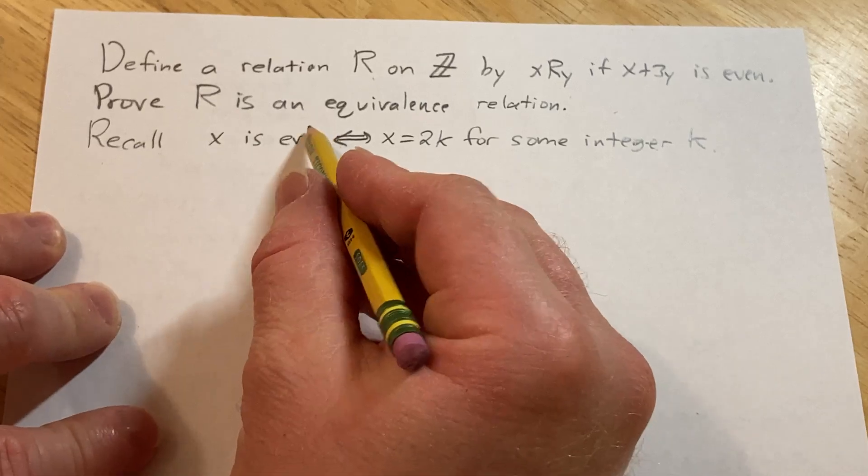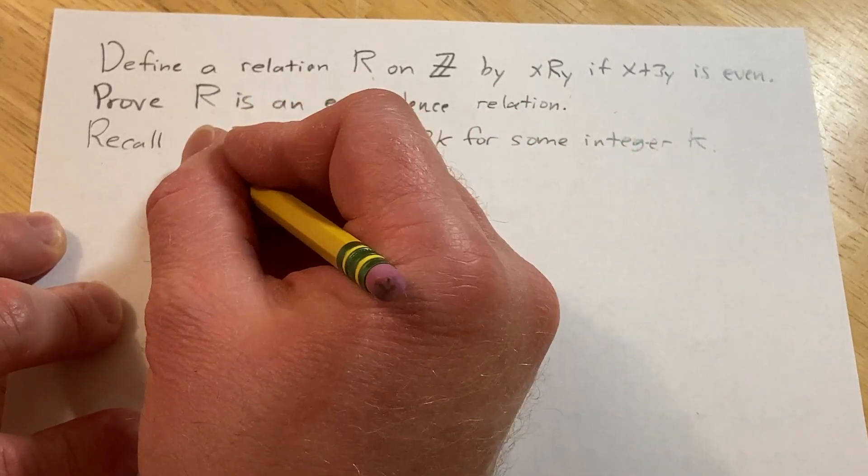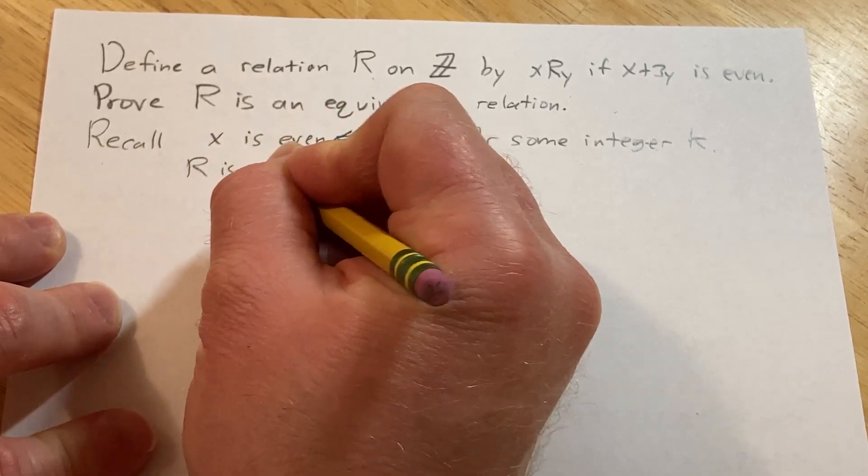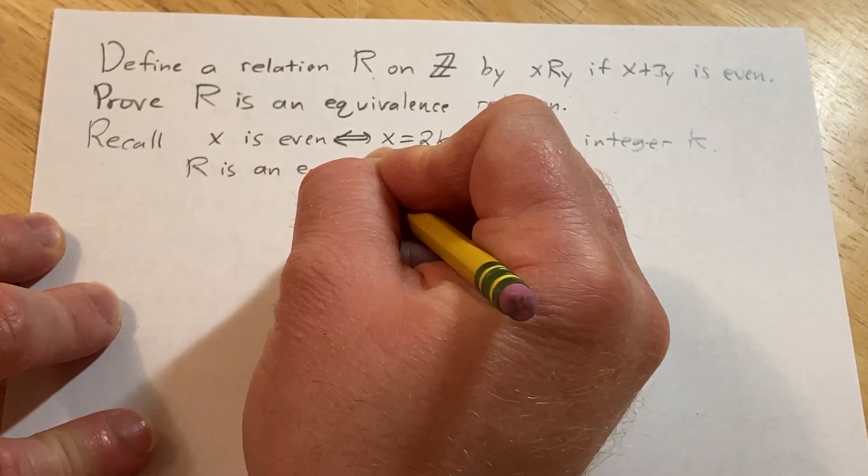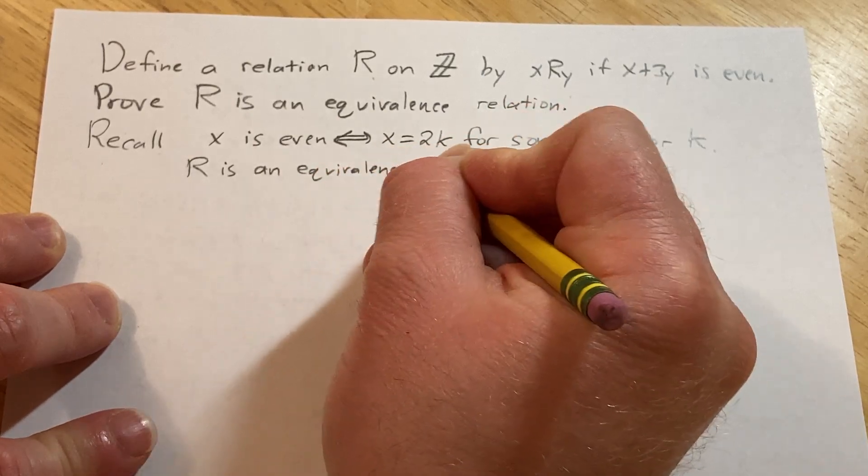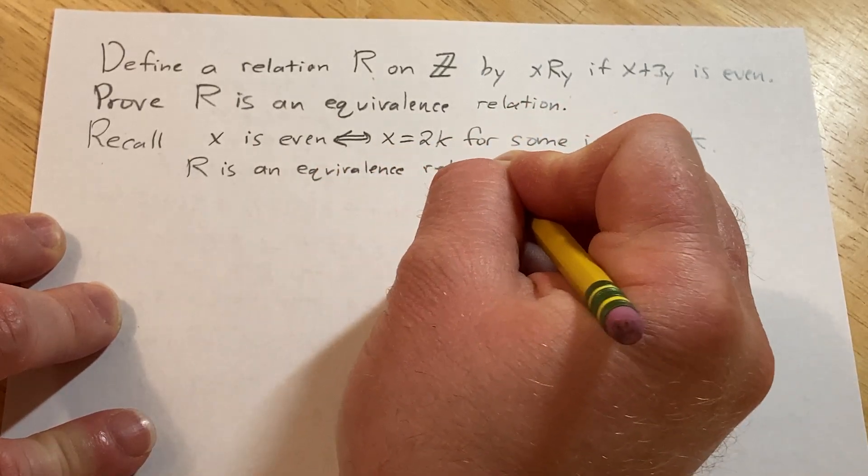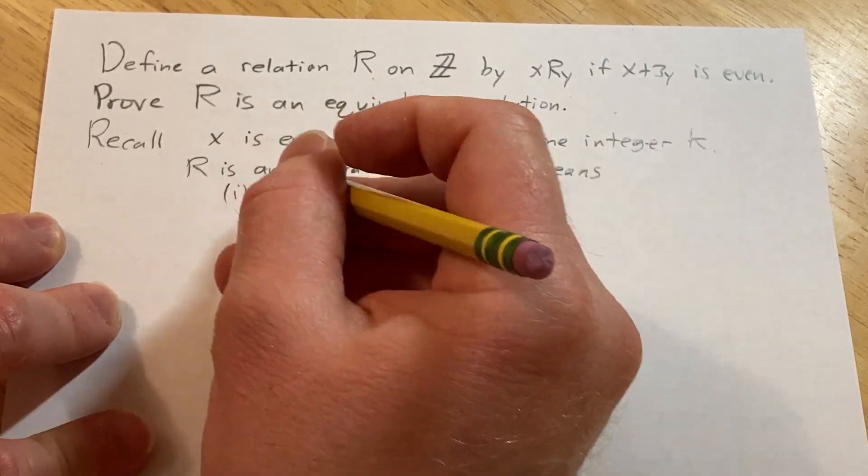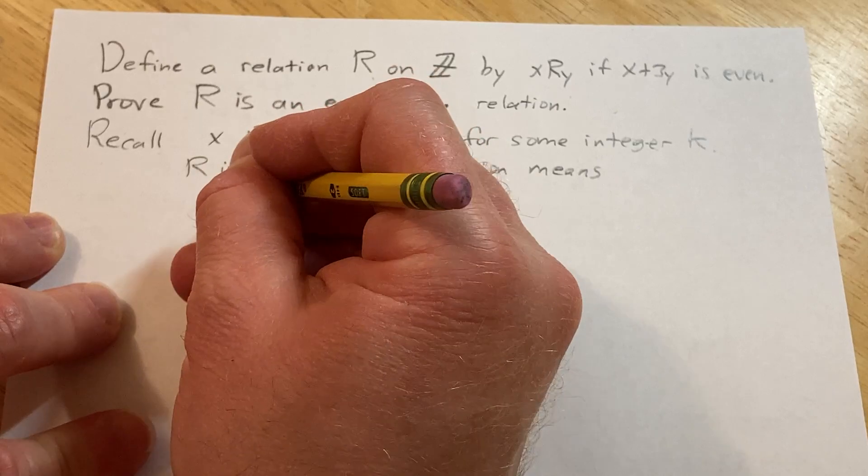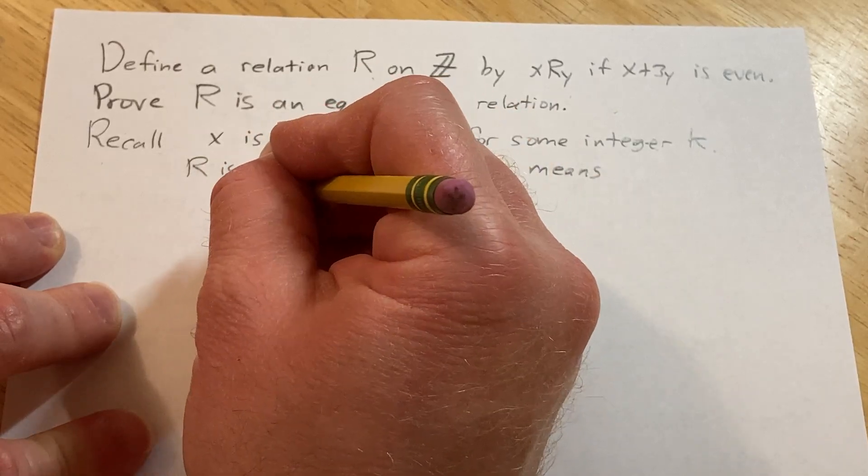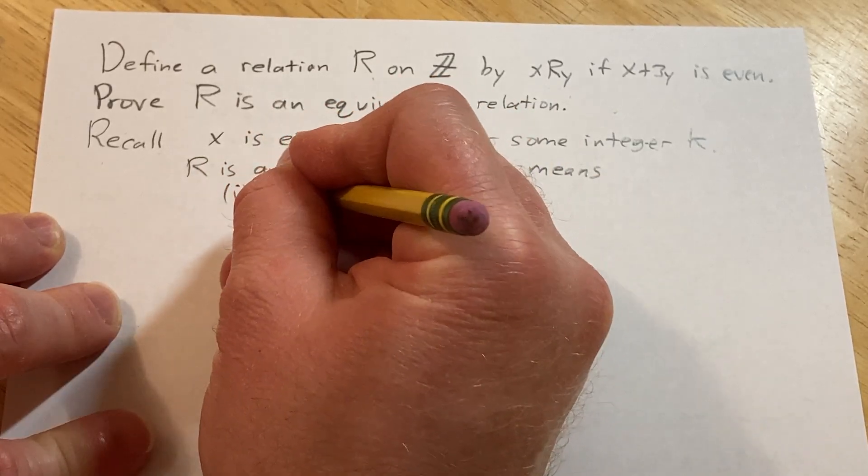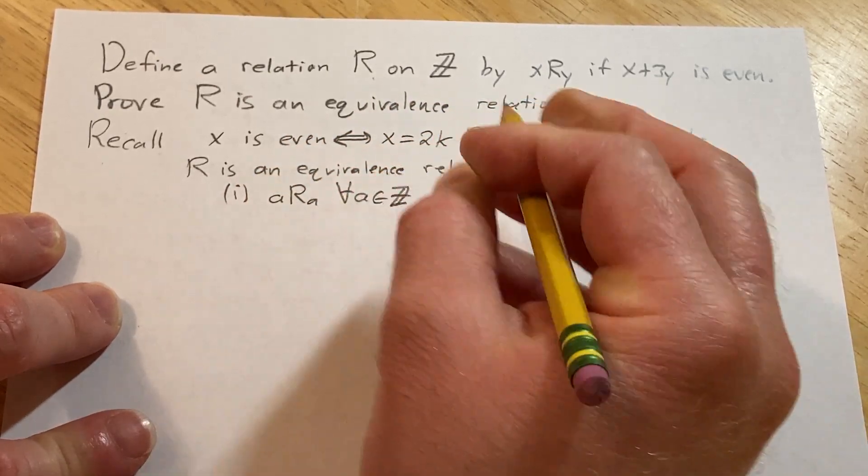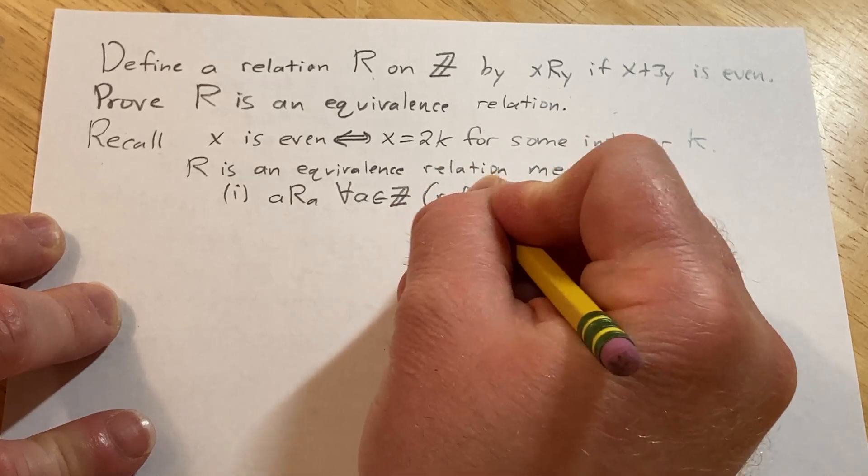Now we need to discuss what it means for R to be an equivalence relation. R is an equivalence relation means three things. One, R is reflexive. Reflexive basically means that a is related to a for all a in Z.